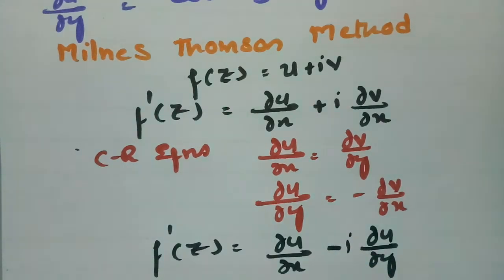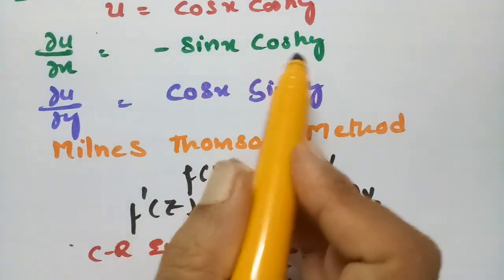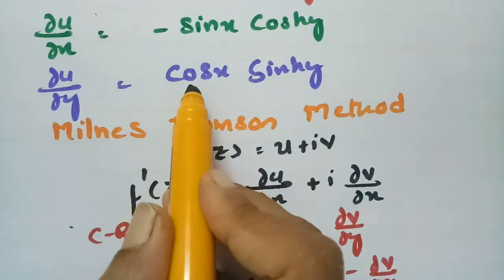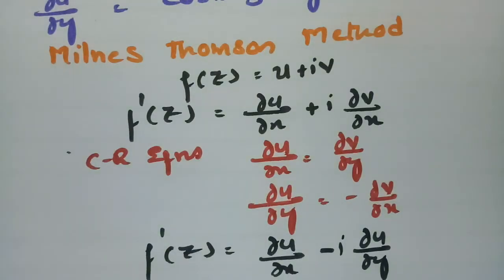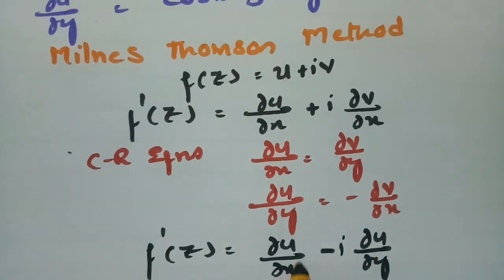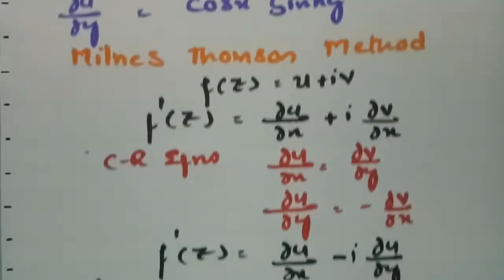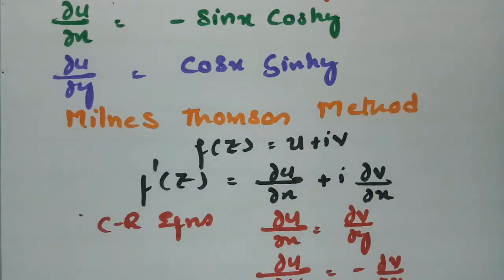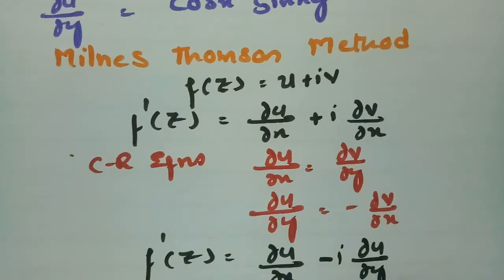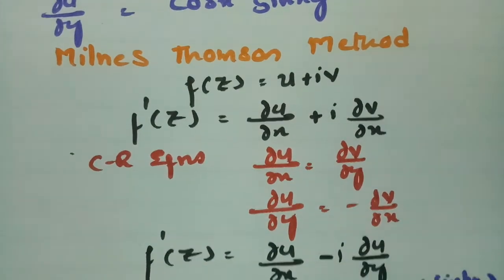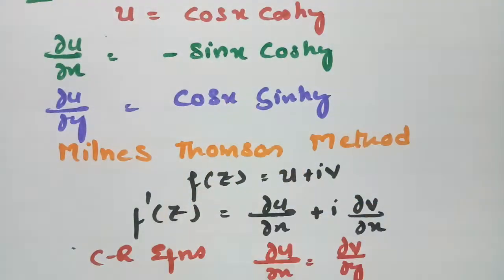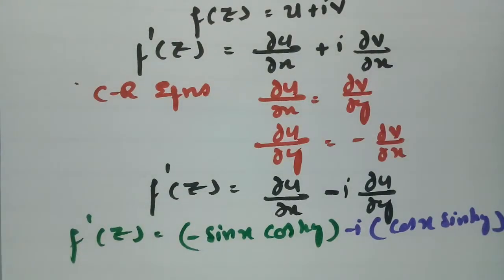I now have both values ready: ∂u/∂x = -sin(x)·cosh(y) and ∂u/∂y = cos(x)·sinh(y). Substituting these values: f'(z) = -sin(x)·cosh(y) - i·cos(x)·sinh(y).